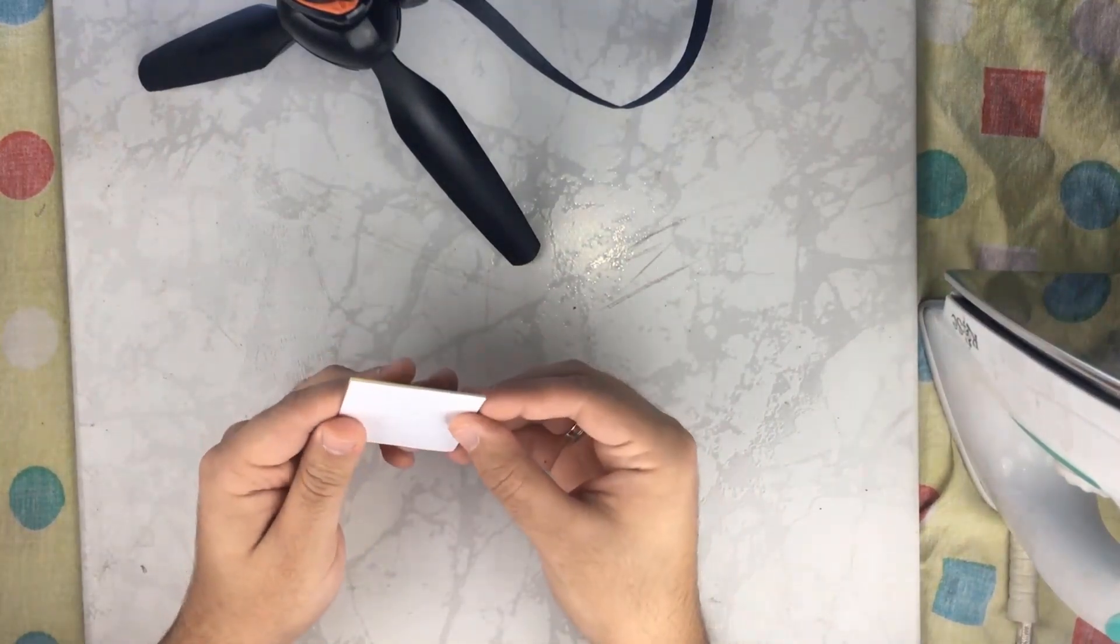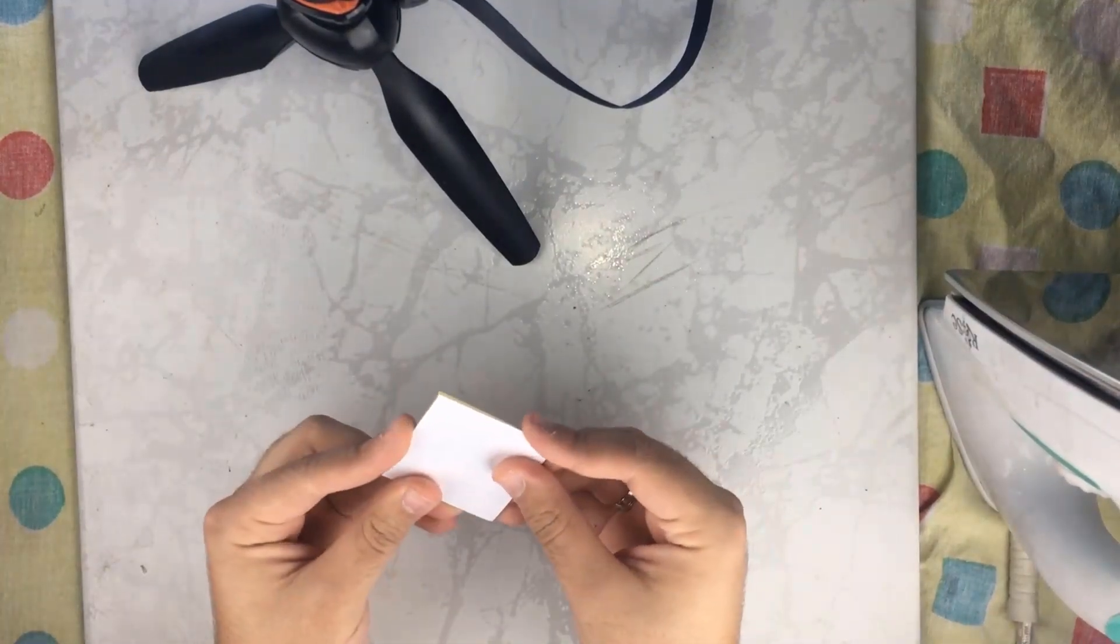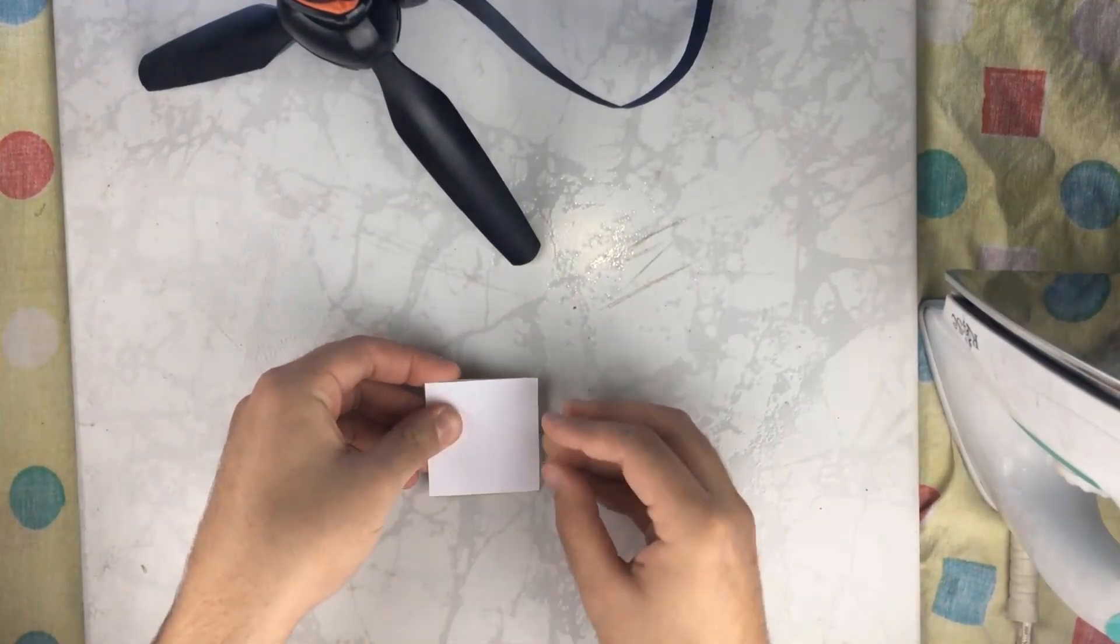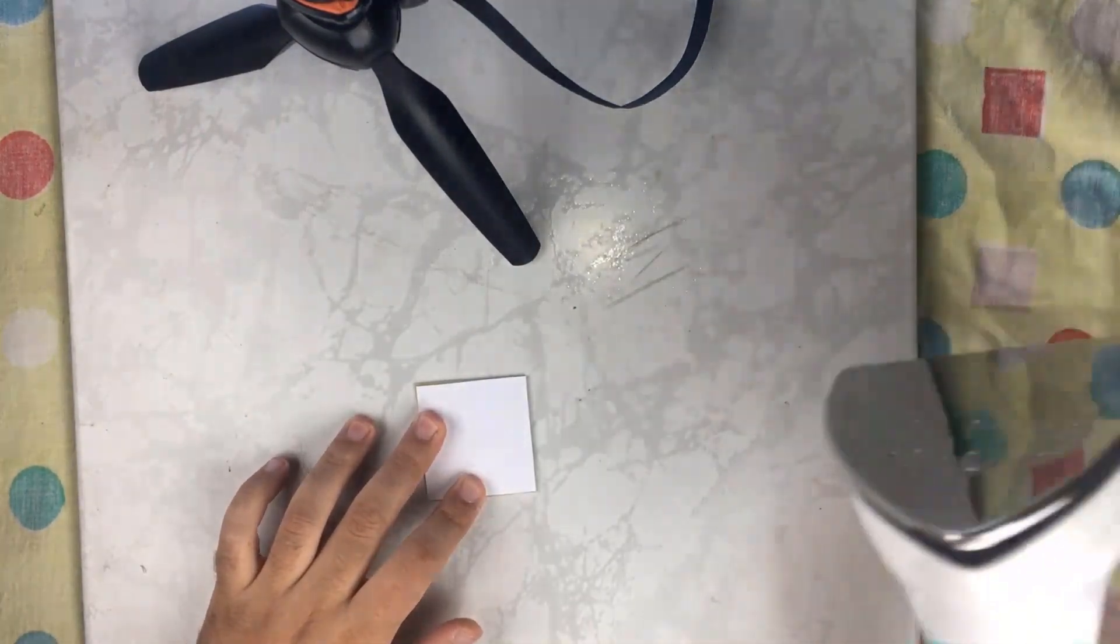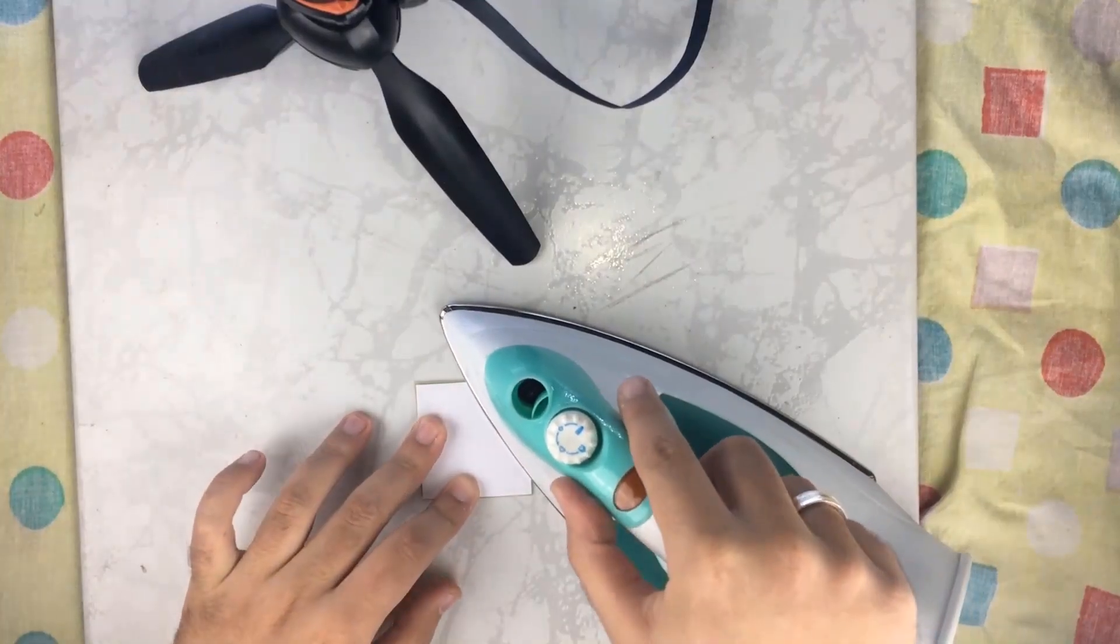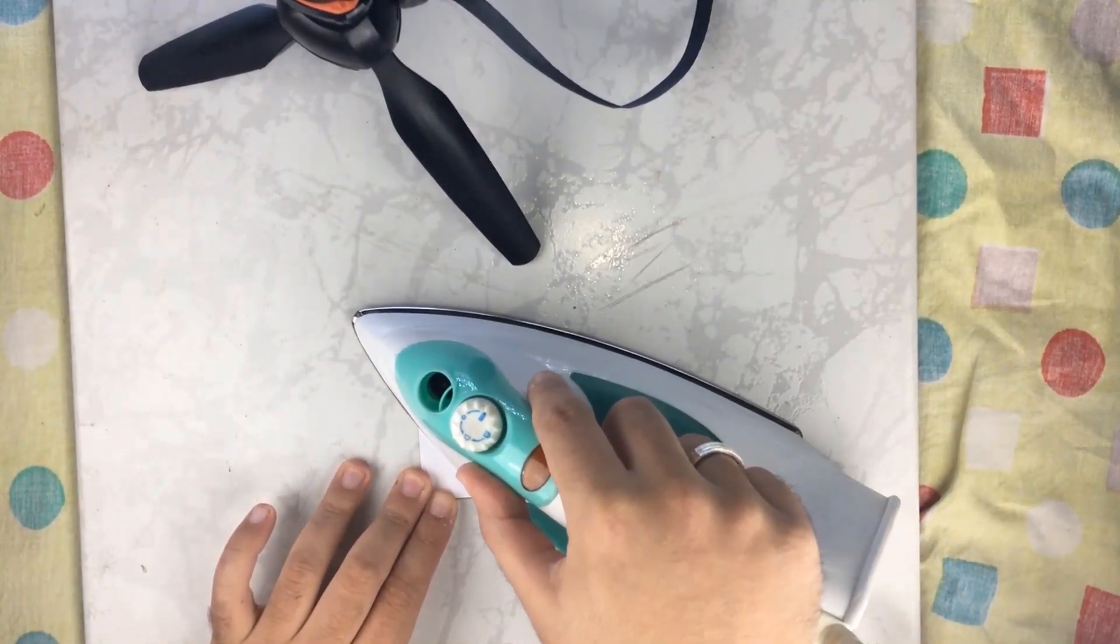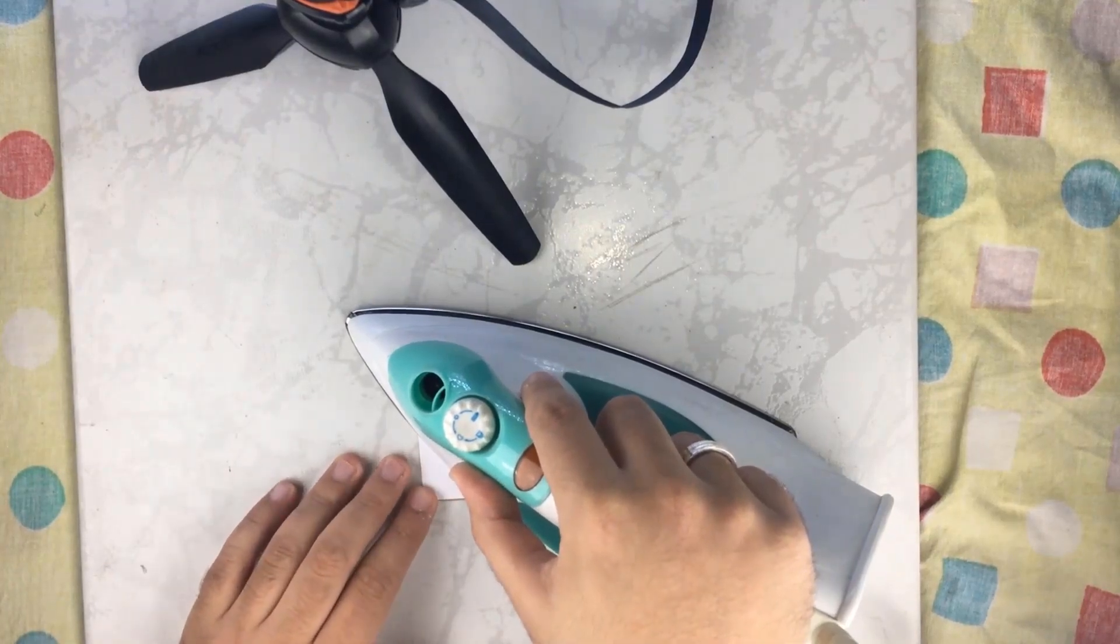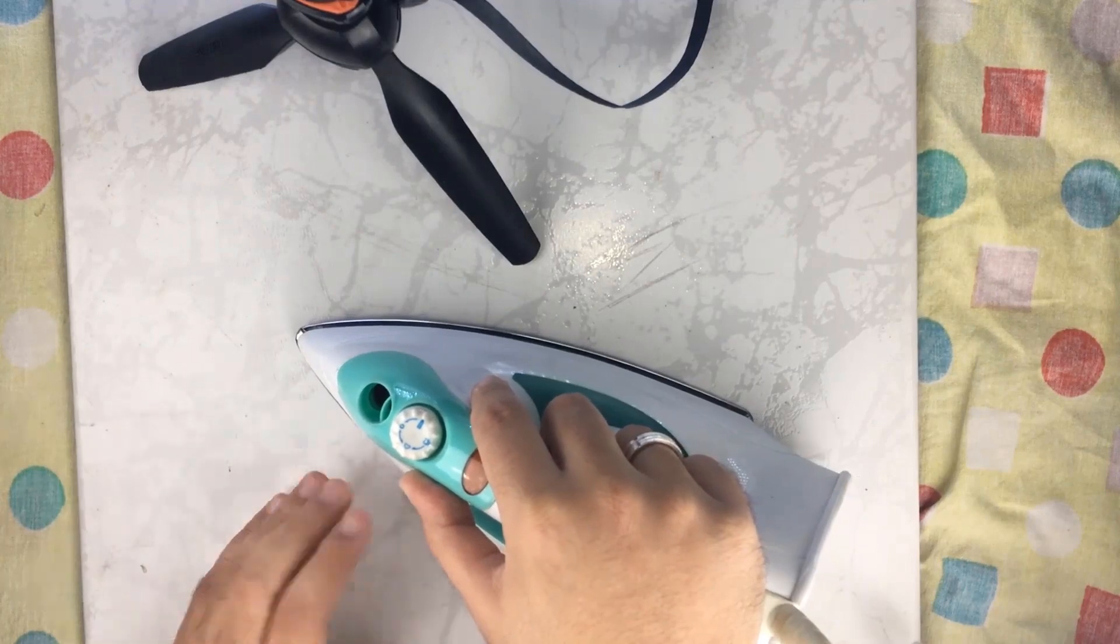And then what we're going to do is use the iron, using the last tutorial method, to make the thermal transfer process. So we're transferring the ink from our silk screen as printed on a laser printer to our PCB.